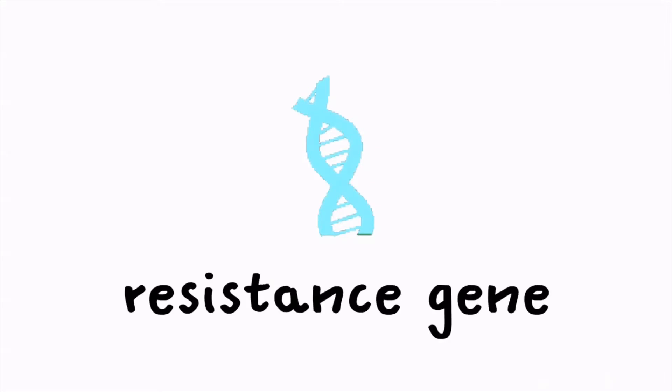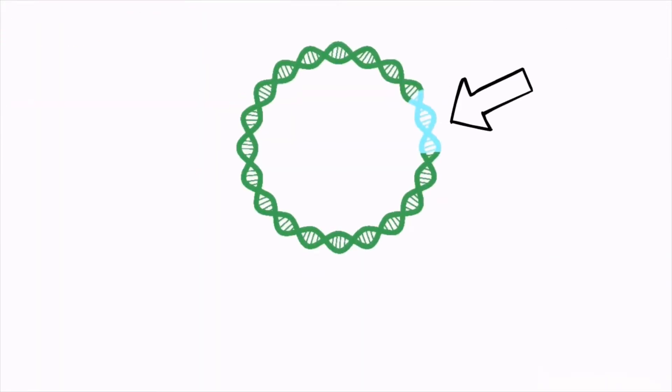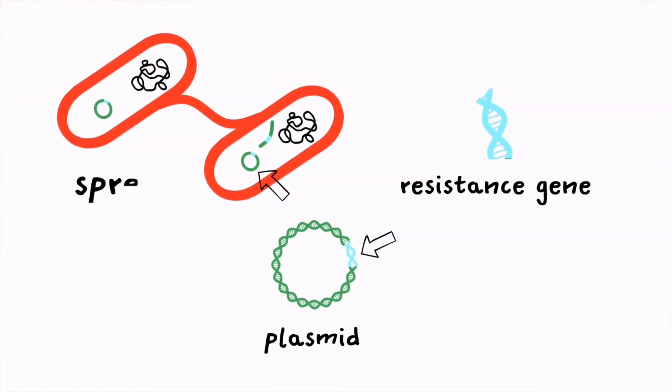In order for bacteria to be resistant, they must possess a resistance gene. Many resistance genes are carried by genetic elements called plasmids, and many of these can spread between bacteria.